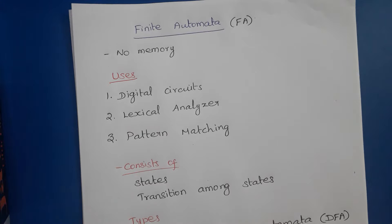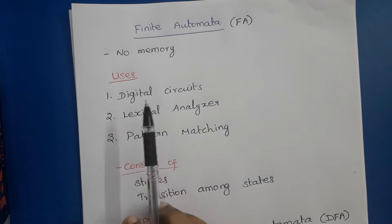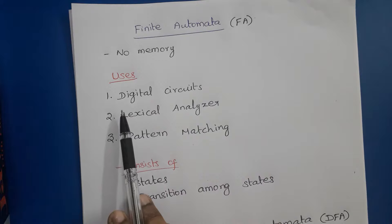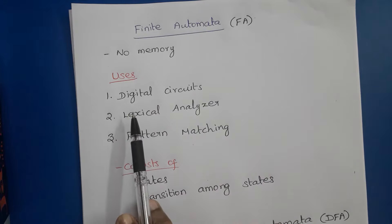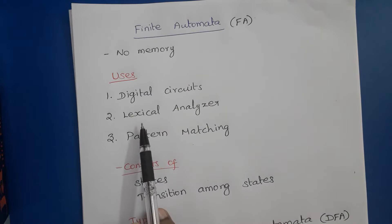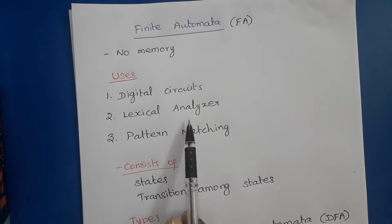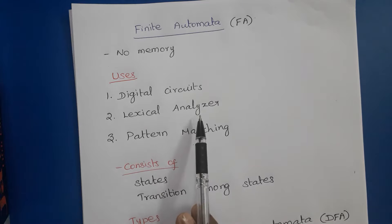Hello everyone. In this video we are going to discuss about finite automata. It is a mathematical model which has no memory. The uses of finite automata are: it is used for checking the behavior of digital circuits, and it is used for constructing the lexical analyzer phase of the compiler. The lexical analyzer reads the characters in the source program and groups them into tokens.